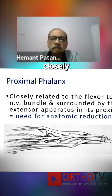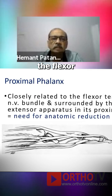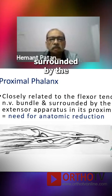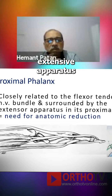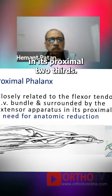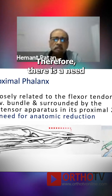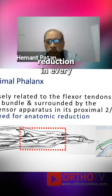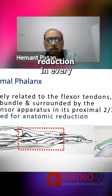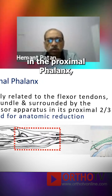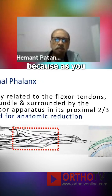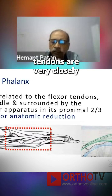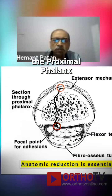The proximal phalanx is very closely related to the flexor tendons, the neurovascular bundle, and it is surrounded by the extensor apparatus in its proximal two-thirds. Therefore, there is a need for anatomical reduction in every case of hand fracture, but more so in the proximal phalanx, because the flexor and extensor tendons are very closely linked to the proximal phalanx.